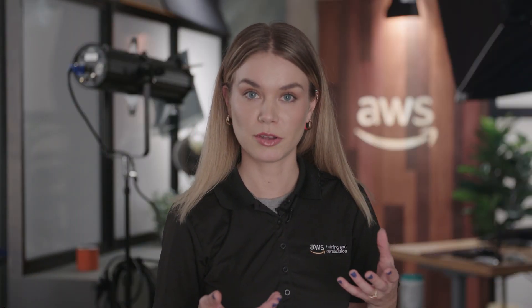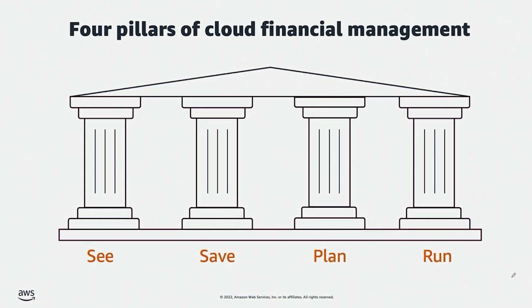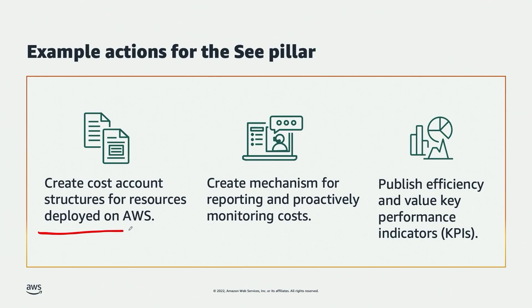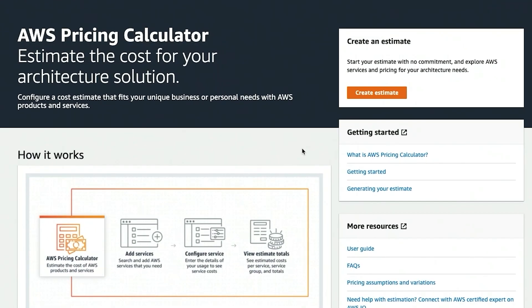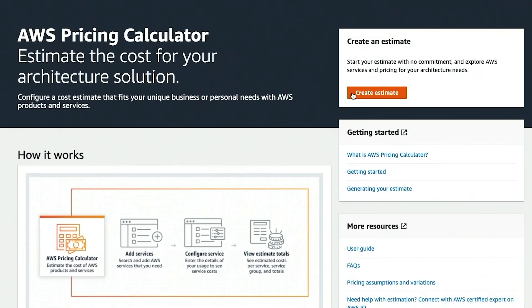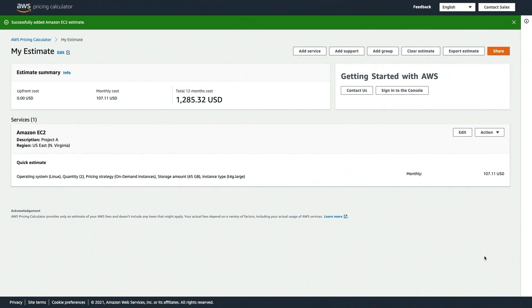Week one of the course really starts at the beginning. We first lay that foundation of, okay, what are we really talking about here? Then we talk about the four pillars of cloud financial management. And then we use the AWS pricing calculator to really show you how you can begin to estimate your costs in the cloud.